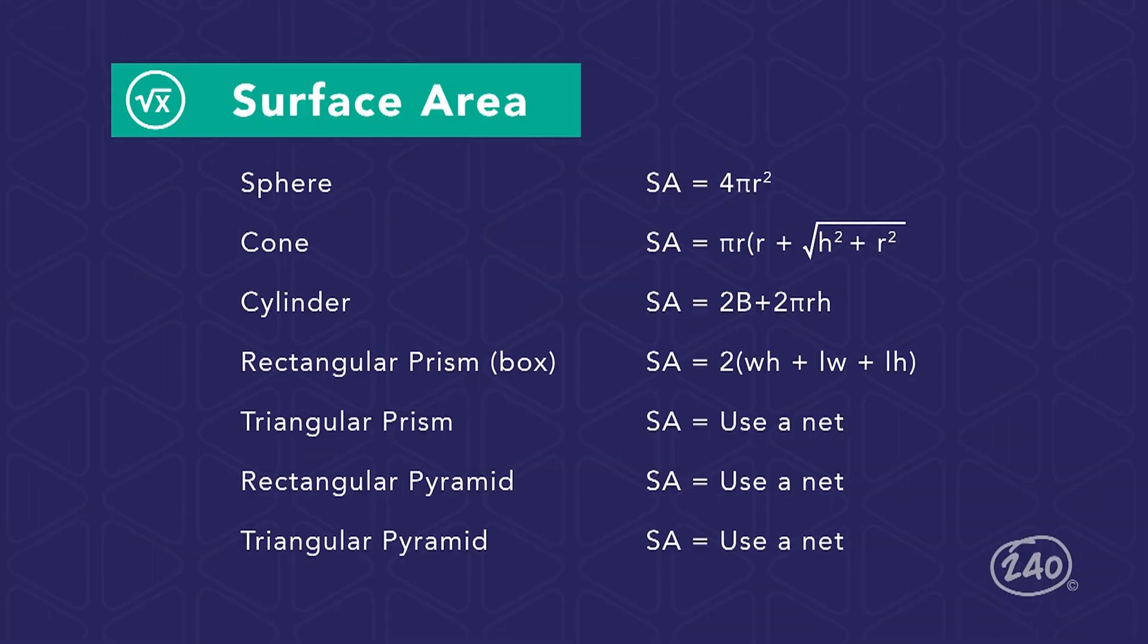Keep in mind, when using these formulas, b is the area of the base, w is the width, l is the length, h is the height, and r is the radius of a circle. You might also notice that some of these say to use a net in place of a formula. We'll get to what nets are in a bit.